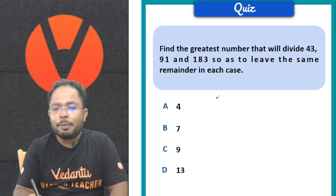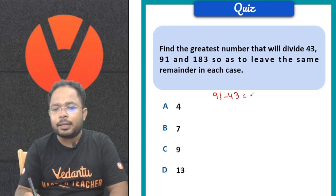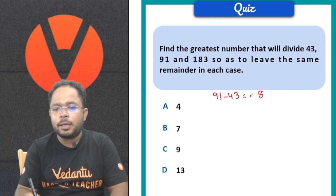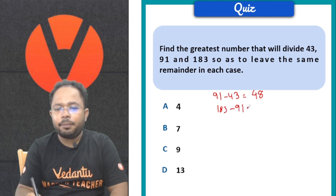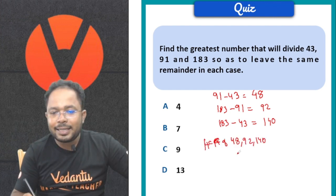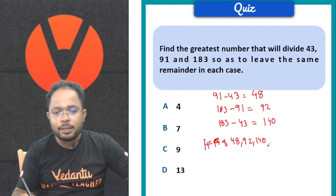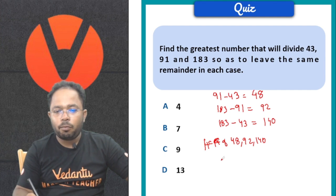So what we will do is subtract first: 91 minus 43 gives us 48. Second: 183 minus 91 gives us 92. Next: 183 minus 43 gives us 140. Now we have to take the HCF of 92, 48, and 140.